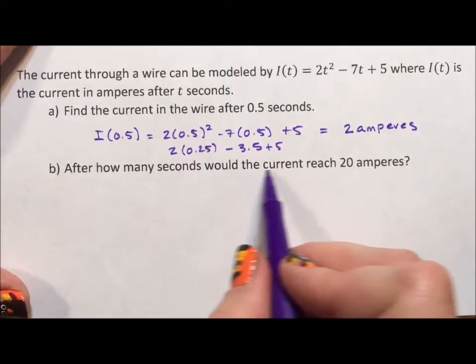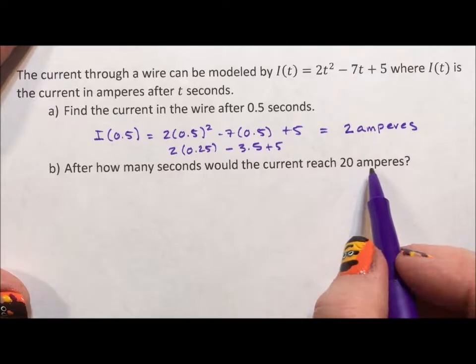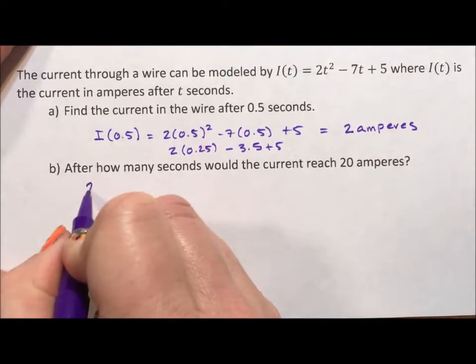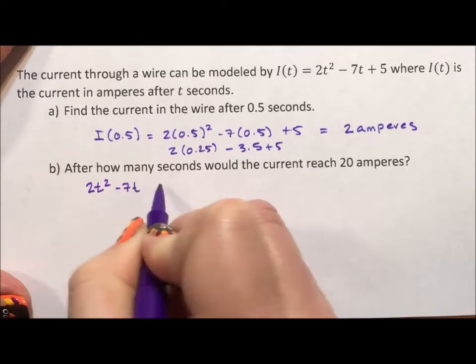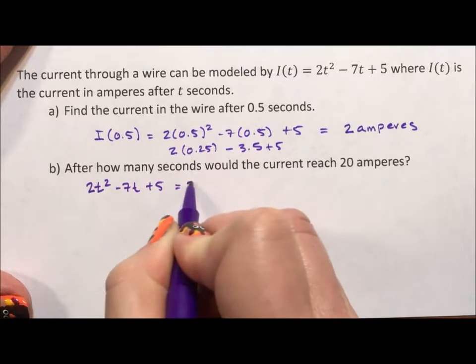After how many seconds would the current reach 20 amperes? So when is 2t squared minus 7t plus 5 equal to 20?